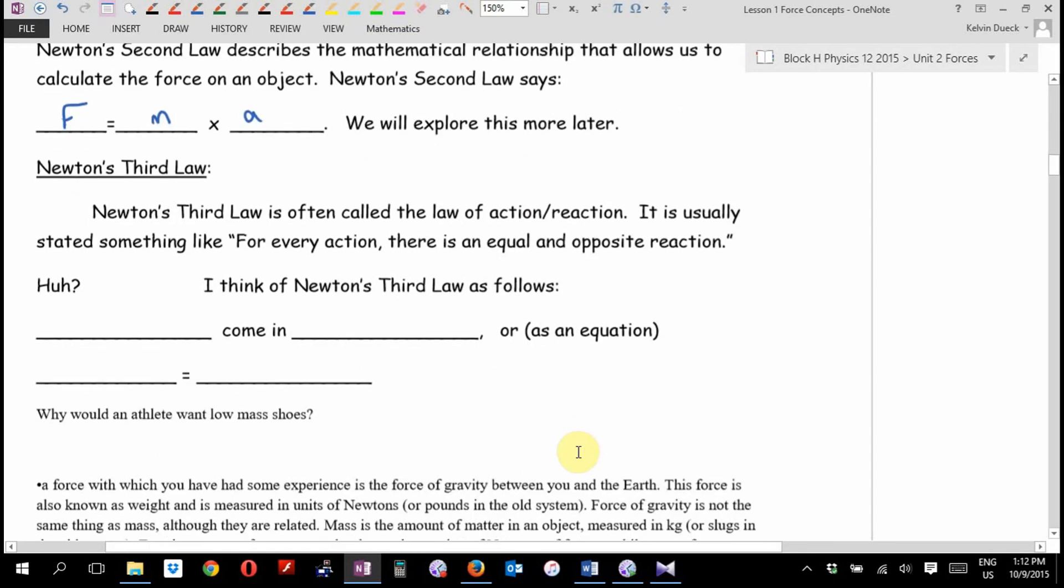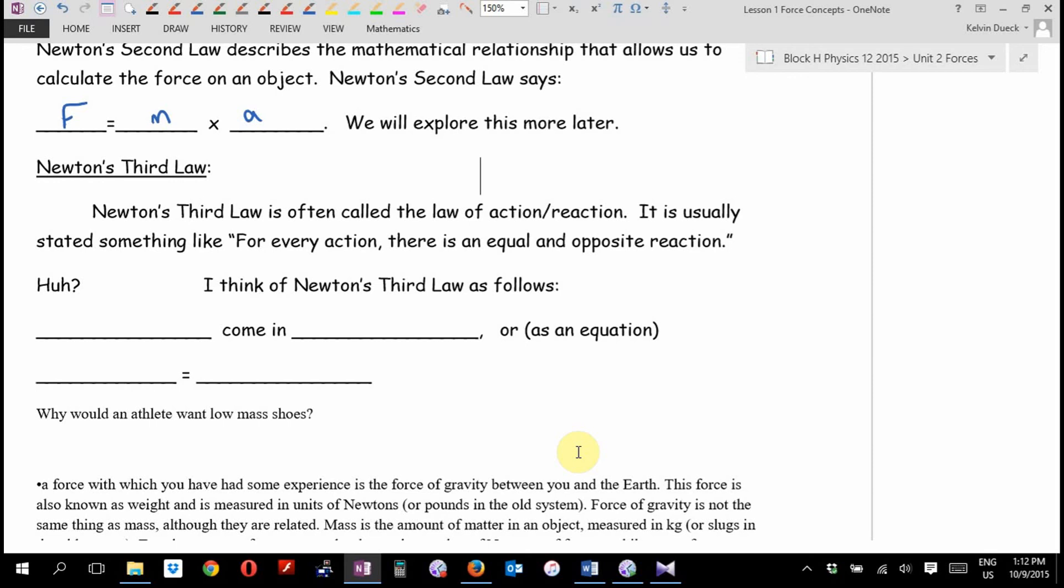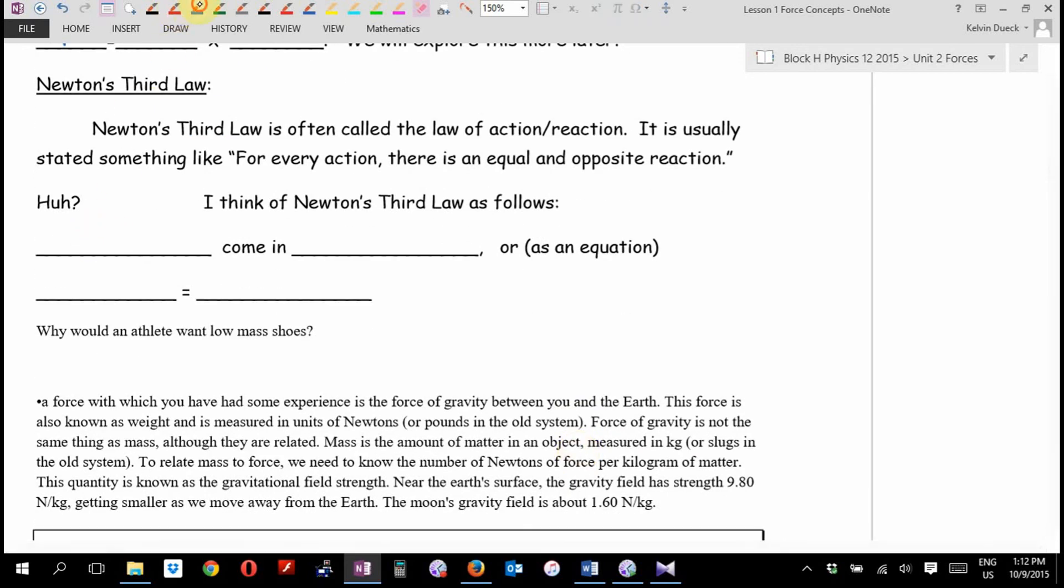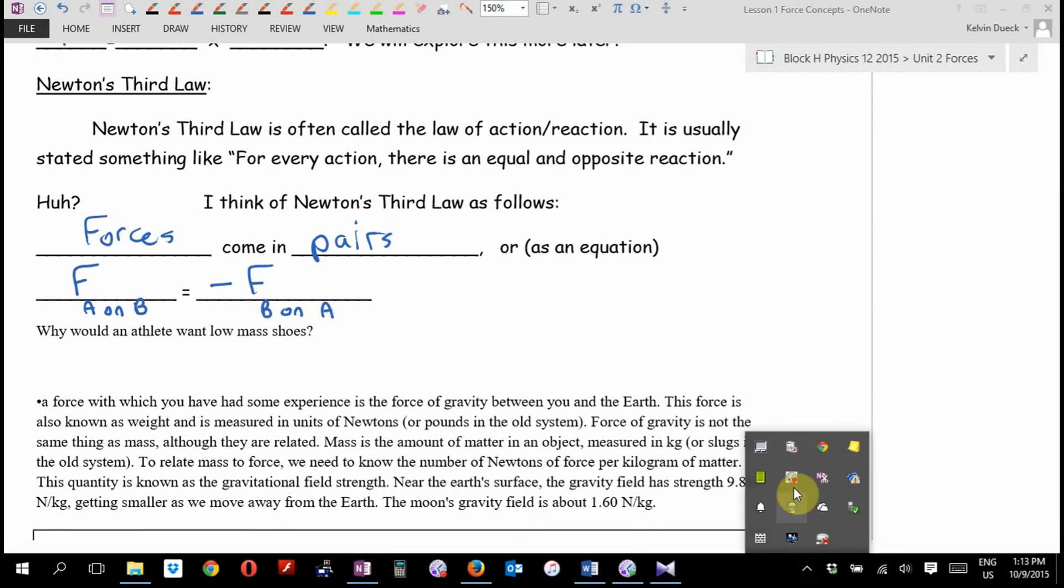Newton's third. Newton's third law is often called the law of action-reaction. It's usually phrased something terribly like, for every action there is an equal and opposite reaction. Terrible. I got a much easier way to wrap your brain around Newton's third law. I think of Newton's third law as follows: Forces come in pairs. Forces come in pairs. And that's true. You cannot have an individual force on its own. There's always a paired force to go with it. There has to be. Forces come in pairs. If I want to write it as an equation, the force of object A on object B is negative the force of object B on object A. They're equal and opposite.